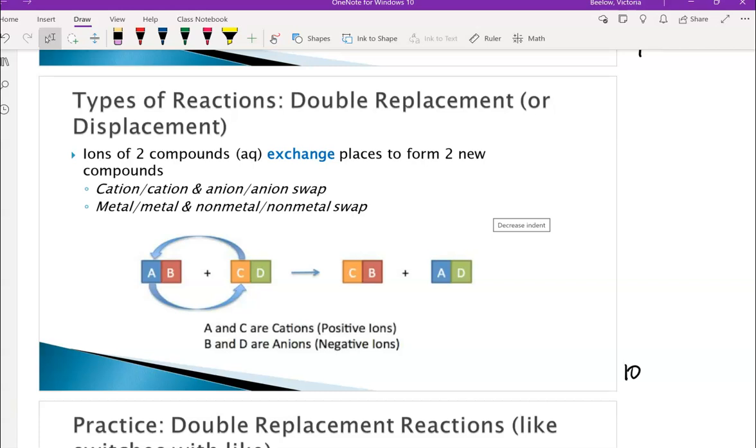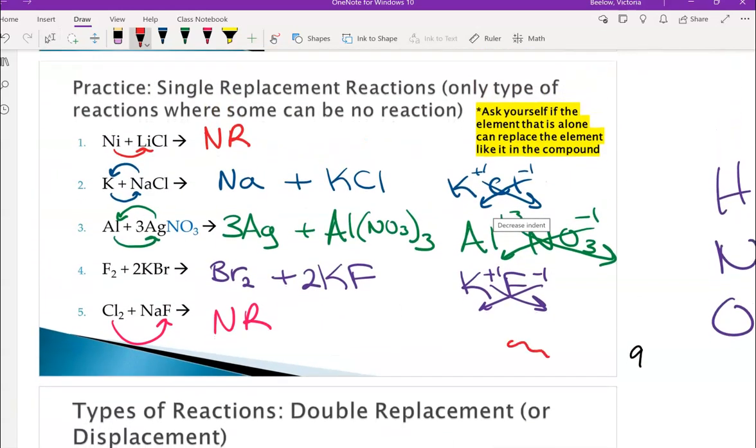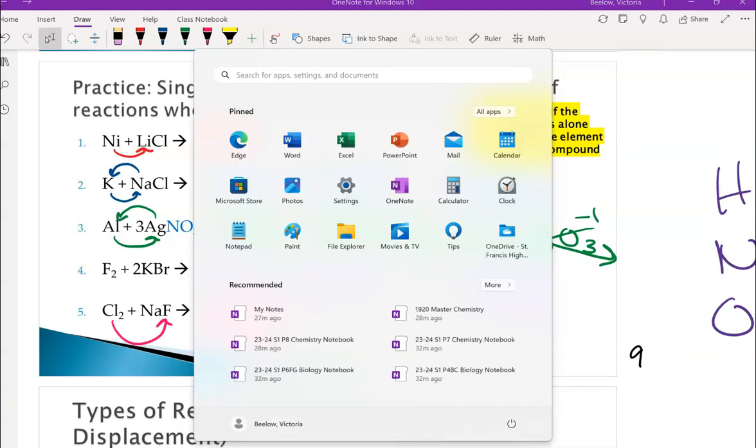Now moving forward, the rest of the types of reactions - double replacement, synthesis, decomposition, and combustion - you can assume they're going to happen. Single replacement is the only type of reaction that possibly could not occur where you would have no reaction.